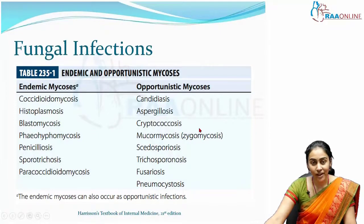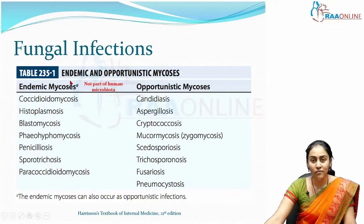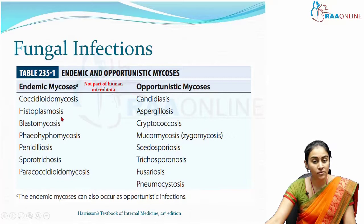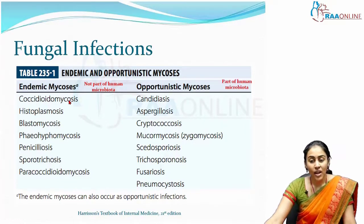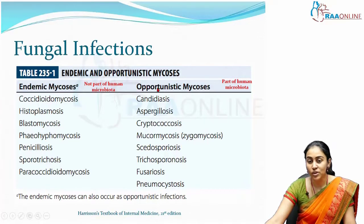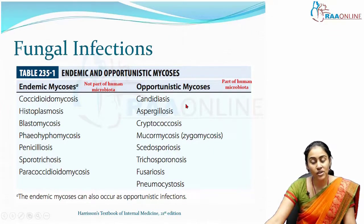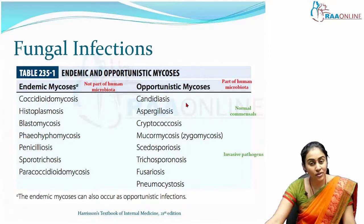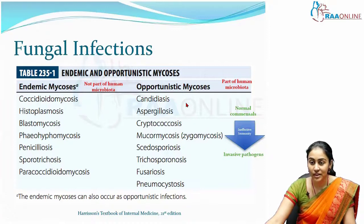We can divide fungal infections into endemic mycosis and opportunistic mycosis. Endemic mycosis are caused by fungal organisms which are not usually part of the human microbiota. These infections are often associated with certain specific activities, like gardening for sporotrichosis, or visits to certain specific places, like for histoplasmosis and coccidioidomycosis. Opportunistic mycosis includes more commonly encountered fungal infections like candidiasis and aspergillosis, caused by organisms that are commonly part of the human microbiota.